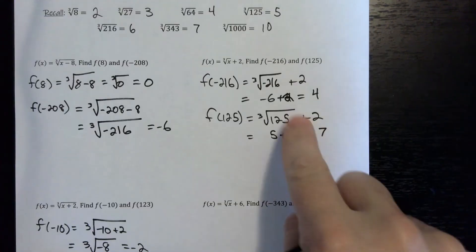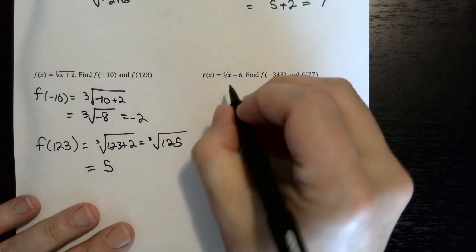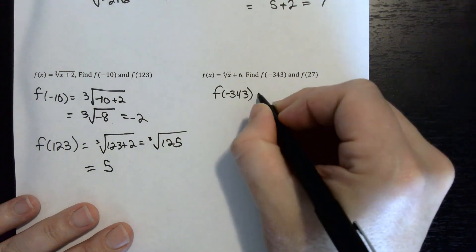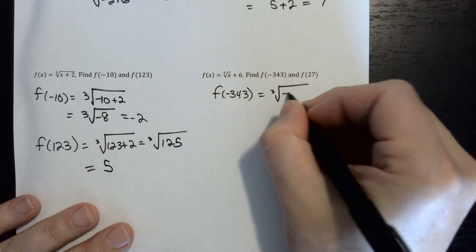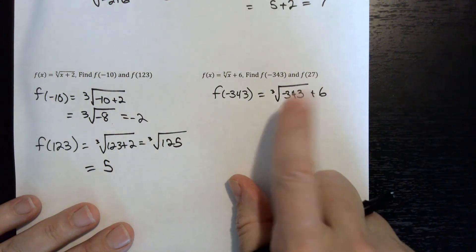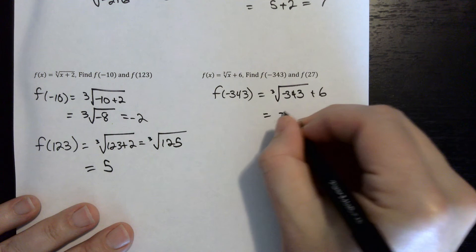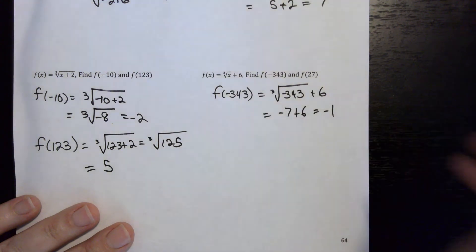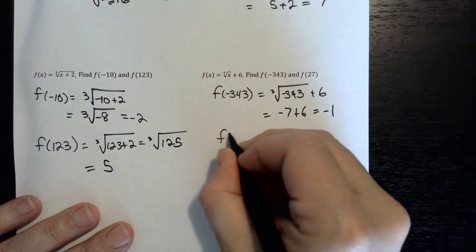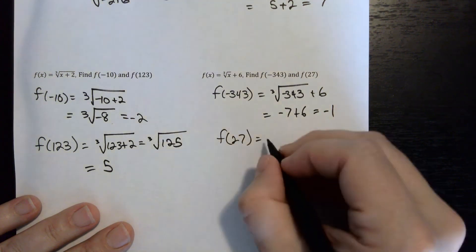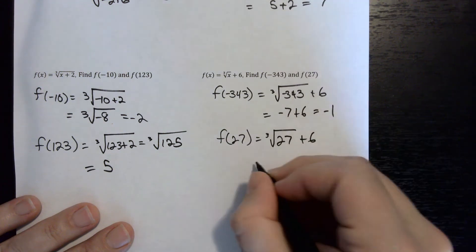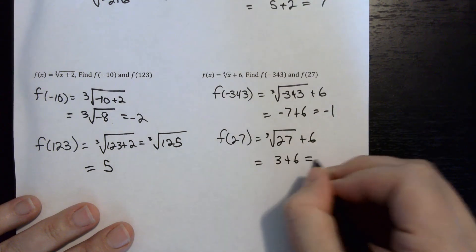For the last cube root example, f of x equals the cube root of x plus 6 where the 6 is outside: f of negative 343 equals the cube root of negative 343 plus 6. The cube root of 343 is 7, so this is negative 7 plus 6, which equals negative 1. And f of 27 equals the cube root of 27 plus 6, which is 3 plus 6, equals 9.